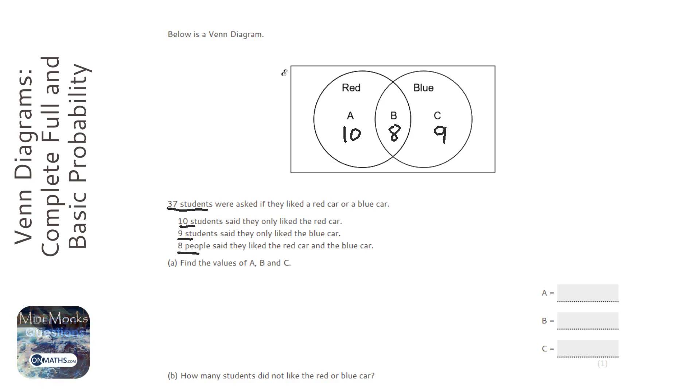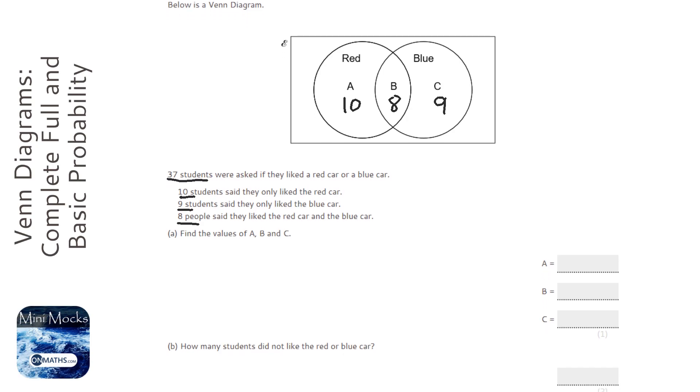So 8 in the middle there, and those are the values for A, B and C. And it says how many students did not like the red or the blue car. So if we add all those together we get 27, but there's 37 students in total, so if we take them away we get the answer of 10.